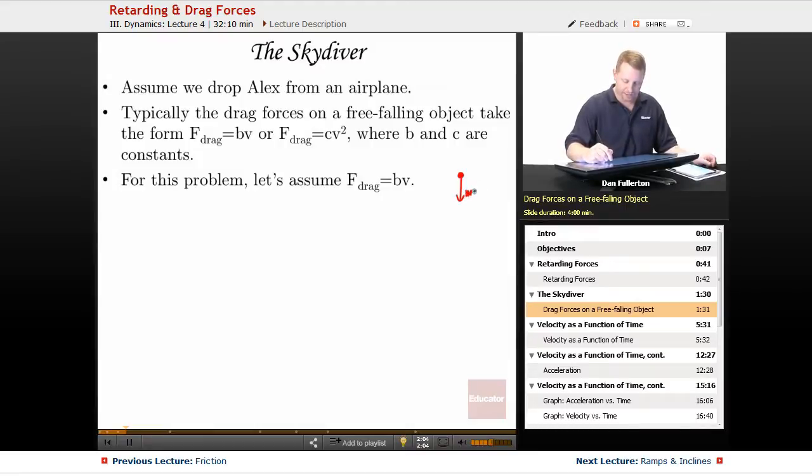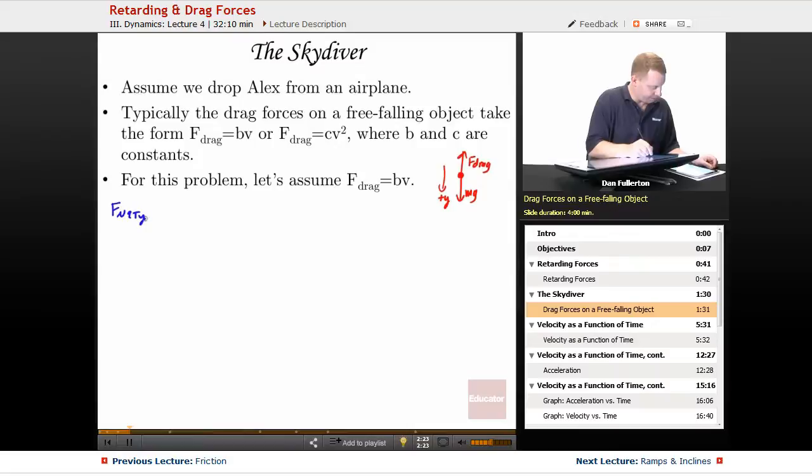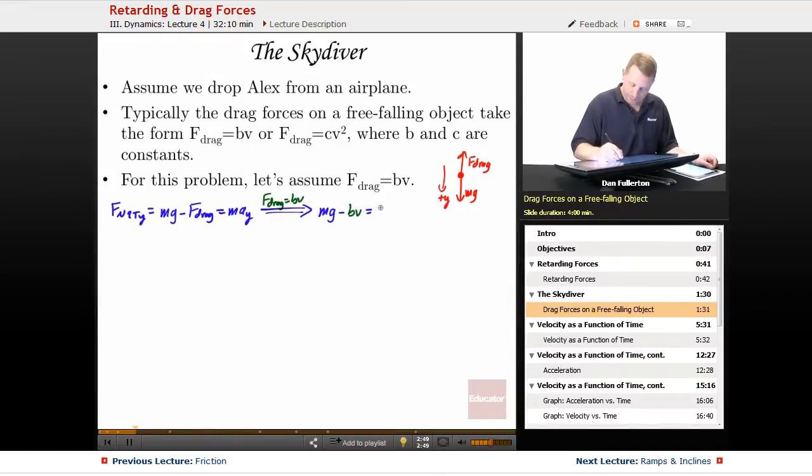So let's draw a free body diagram for our dear friend Alex who we're about to push from an airplane. We have the weight of Alex pulling him down and the drag force back up. And we'll call down the positive y-direction since that's the way Alex is going to start his motion and finish his motion. So as I analyze this, the net force in the y-direction using Newton's second law is going to be mg minus the drag force. And so then we could write that mg minus bv equals ma.